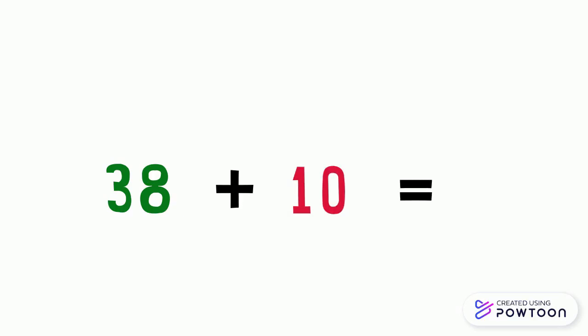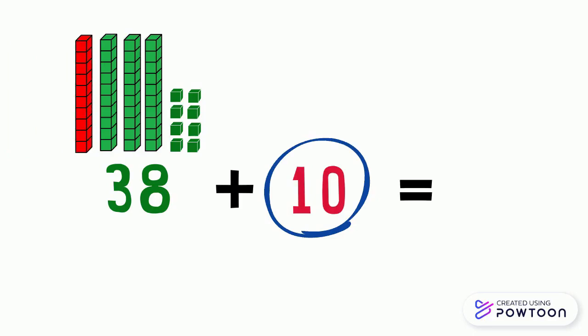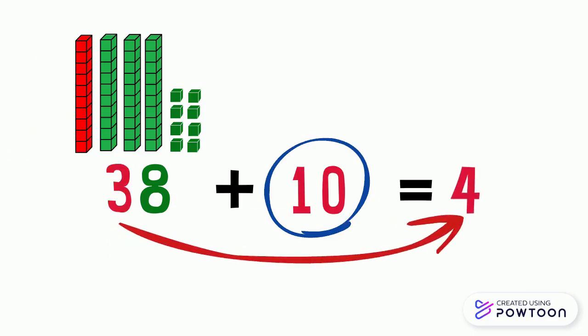And now, let's remember how to add 10 to a number. Let's take this example: 38 plus 10. The number 38 is made up of 3 tens and 8 ones. To add 10, we should add 1 ten to the tens digit, which is 3. So it becomes 4. And the ones digit didn't change — it remains the same. So, 38 plus 10 equals 48.